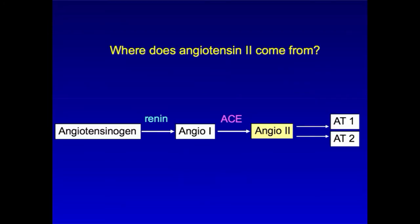Angiotensin II is formed when renin catalyzes the production of angiotensin I, which is then acted upon by angiotensin-converting enzyme, or ACE, to produce angiotensin II.